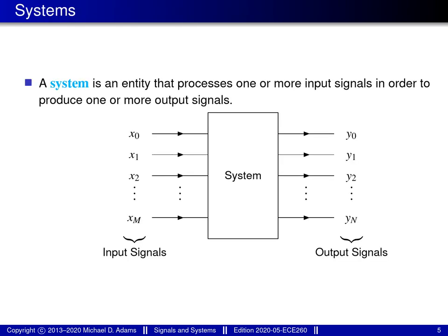Next I'd like to talk about systems. A system is simply some entity that takes in one or more signals as input and transforms or manipulates them in some way to produce some number of signals as outputs. In a general picture, we have M inputs going into the system, which transforms them to produce N output signals. What the system does could be something very trivial or something extremely complicated, depending on the particular application.